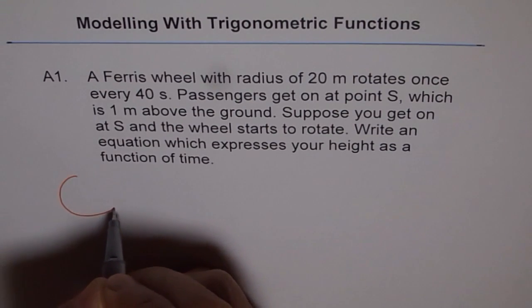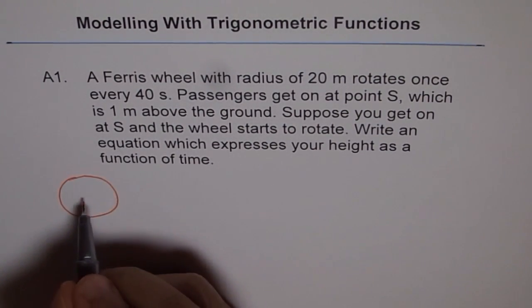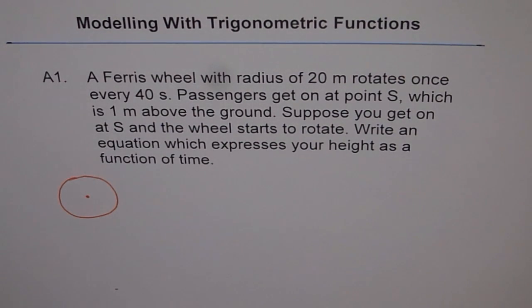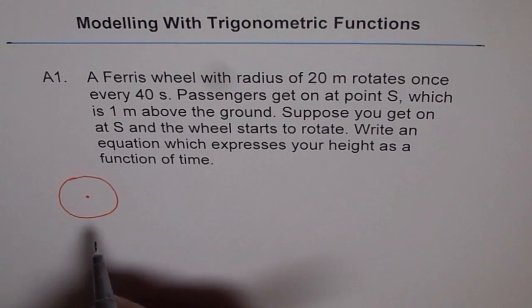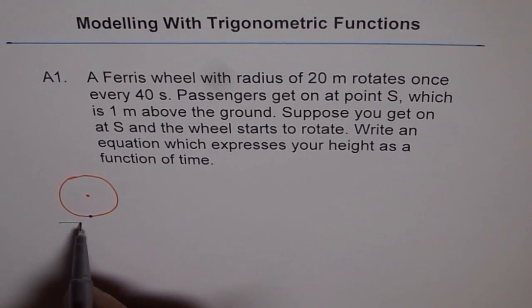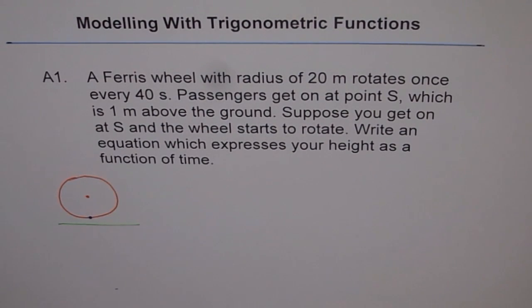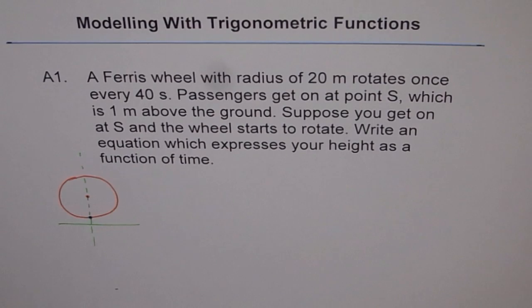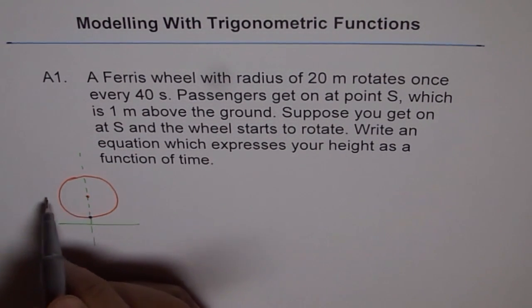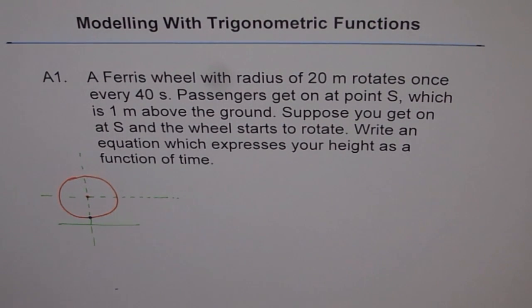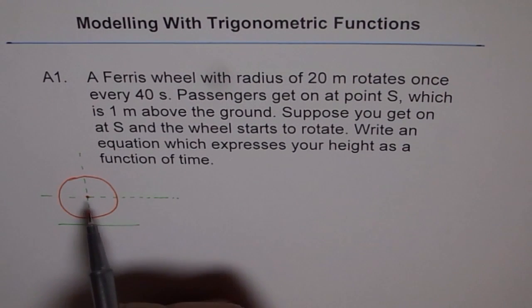Let's assume this is our Ferris wheel and that's the center. Passengers get at position S, which is 1 meter above the ground. Let's say this is the position S and it is 1 meter above the ground. This is our ground. What we will consider here is, let's say this is our vertical axis and let's consider this to be our horizontal axis of symmetry for this particular case, because that's the center.